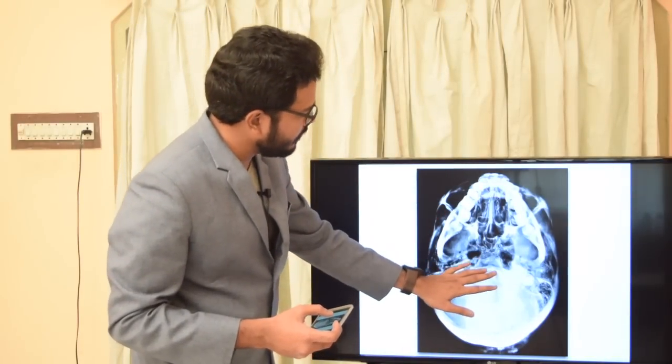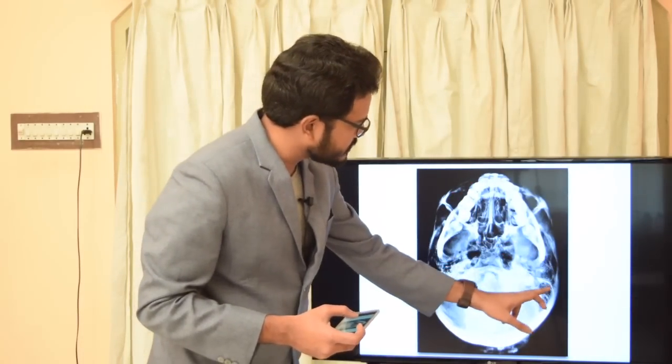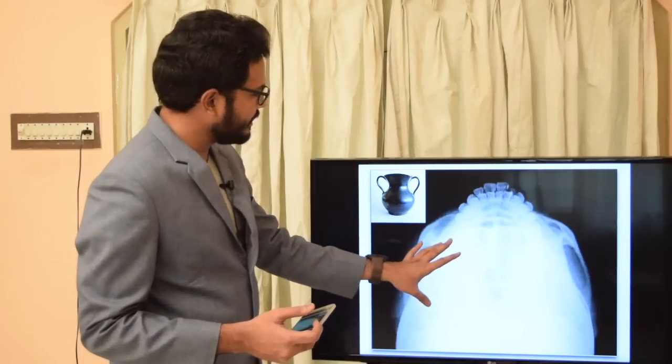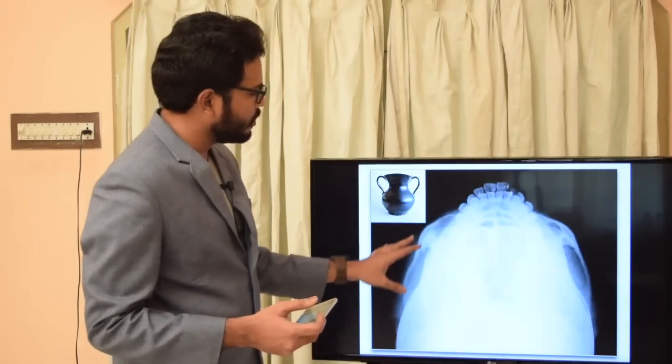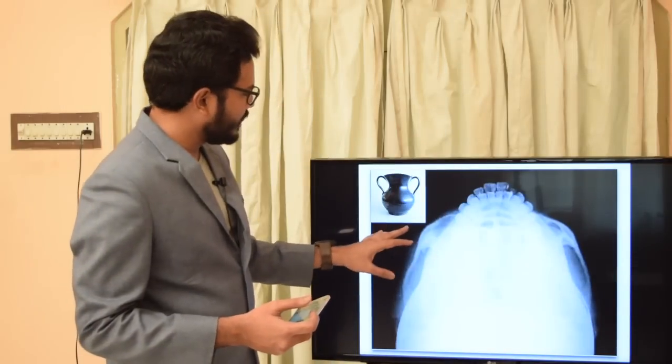This radiograph depicts the submental vertex view, where we can clearly visualize the base of the skull, the inferior border of the mandible, and the zygomatic arches. The projection is called submental vertex as we project an x-ray beam from the mental process of the mandible towards the vertex of the skull. In another radiograph, the exposure has been reduced to one-third to make zygomatic arches more prominent.